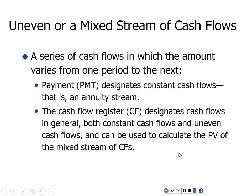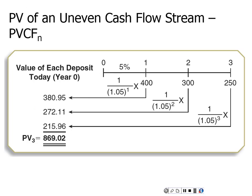Here's what it looks like on the timeline. We have a simple mixed stream: $400 occurring at time period 1, $300 at time period 2, and $250 at time period 3. The discount rate is 5%. One possible way to calculate this is to find the present value of each: take the $400 back one period, the $300 back two periods, and the $250 back three periods at 5%. We would add them up and get $869.02.